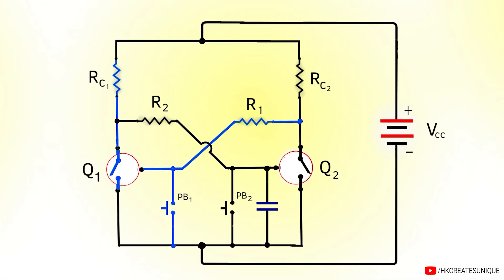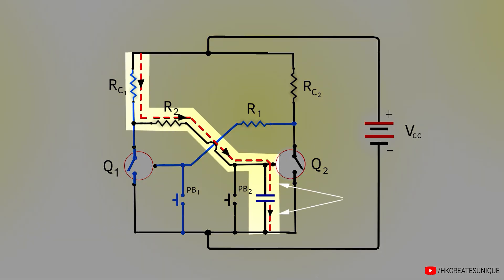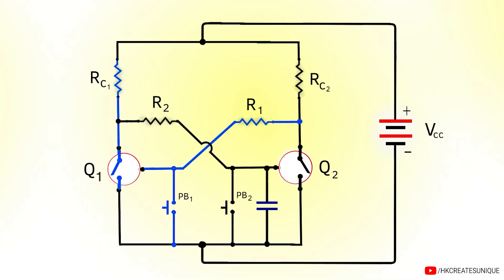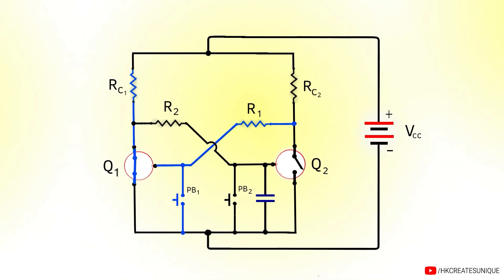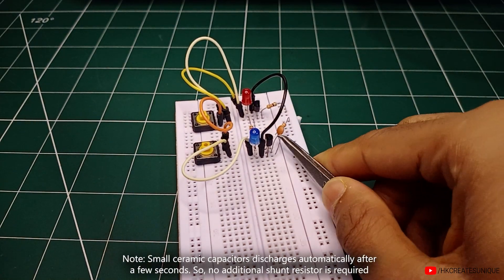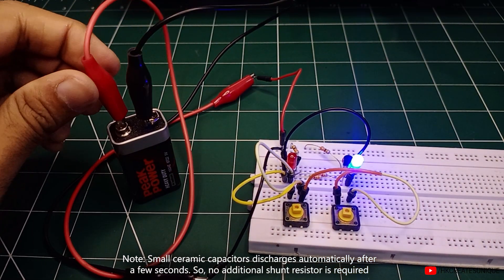In the bistable multivibrator circuit, as the capacitor charges, the voltage across it will be 0 volts initially, which means Q2 will be off initially. Because Q2 is off, Q1 will be on. So when powering up the circuit with the capacitor connected, it is guaranteed that Q1 will be on and Q2 will be off. The blue LED glows initially every time the circuit is powered up.